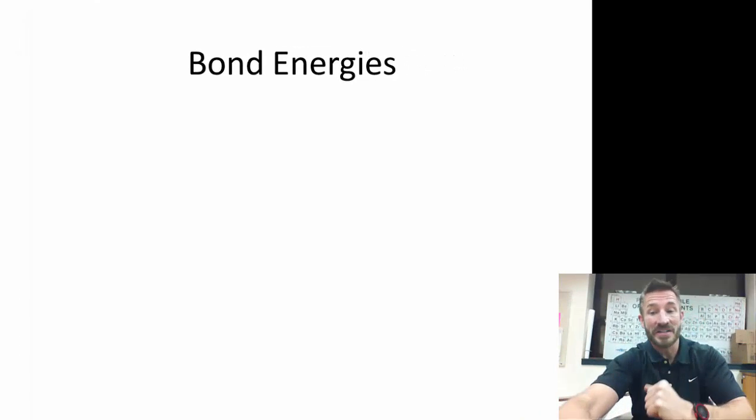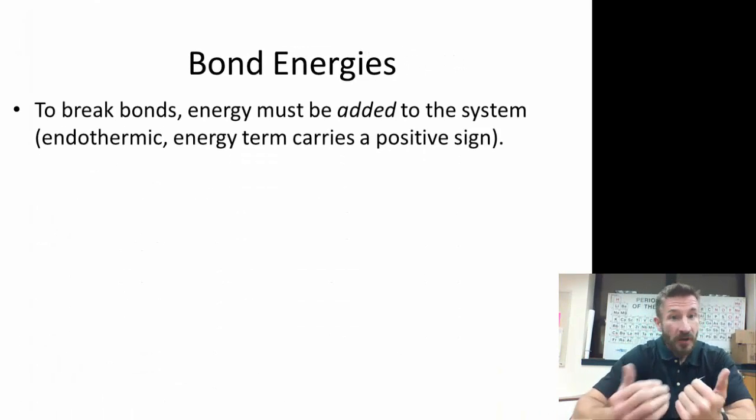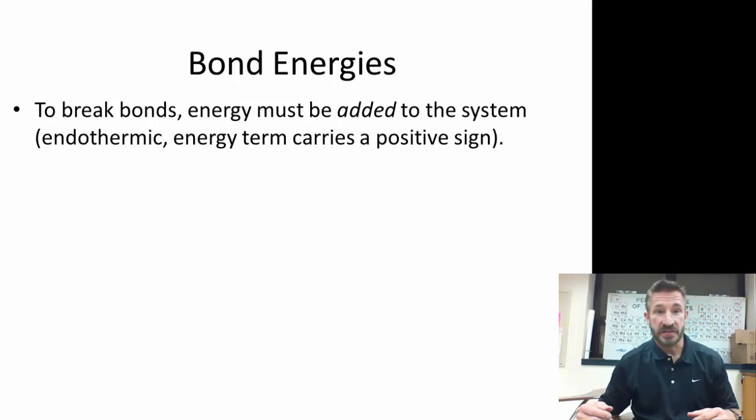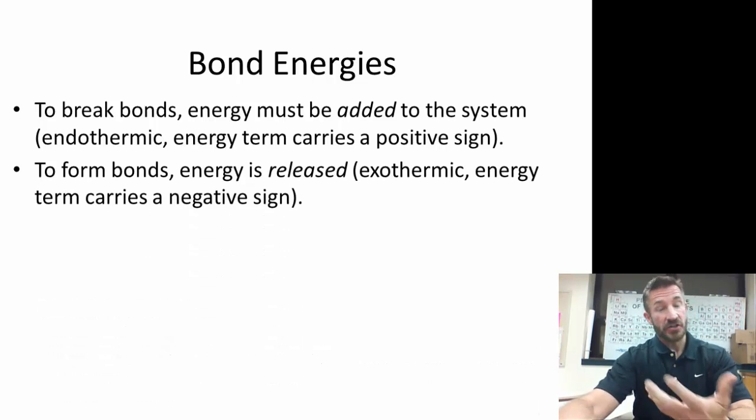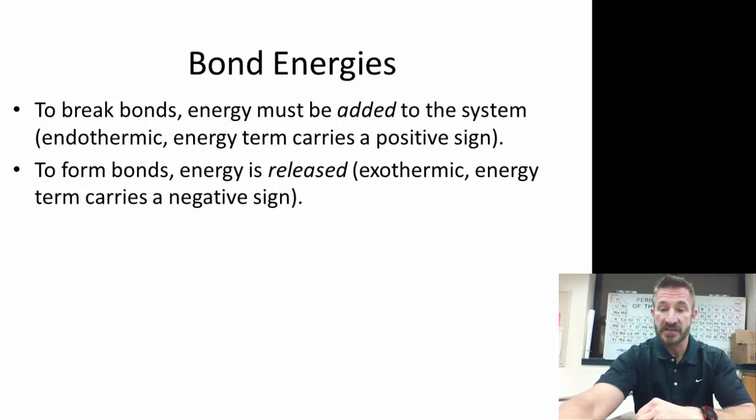Today we're going to learn about bond energies. To break bonds, energy must be added to the system, so they're endothermic. You're putting energy in to pull atoms apart to break that bond. To form bonds, actually the opposite happens—energy is released. So that's exothermic and it has a negative sign.